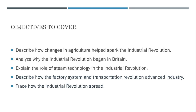The establishment of the factory system transformed production methods. Factories centralized production, housing multiple machines and workers in a single location, streamlining manufacturing processes and increasing output. The introduction of division of labor and the use of machinery in factories significantly enhanced productivity. Simultaneously, the transportation revolution, marked by the construction of canals and the development of railroads, revolutionized the movement of goods and people. Canals like the Bridgewater Canal, and later the revolutionary invention of the locomotive by George Stephenson, facilitated the efficient and rapid transportation of raw materials and finished products, connecting regions and driving economic growth.